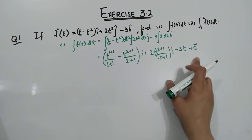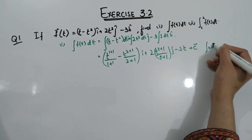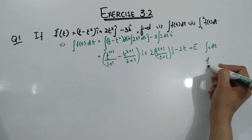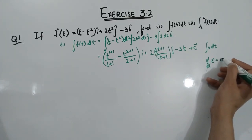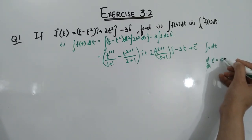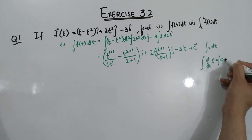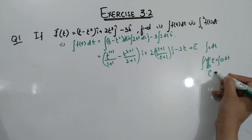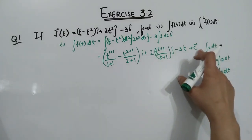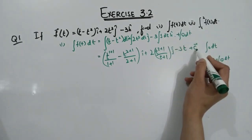The constant of integration appears because the derivative of any constant is 0. Since integration is the inverse of differentiation, if we integrate 0 we get a constant. This means if there is nothing present, obviously 0 is there, and the integration of 0 dt gives any constant.